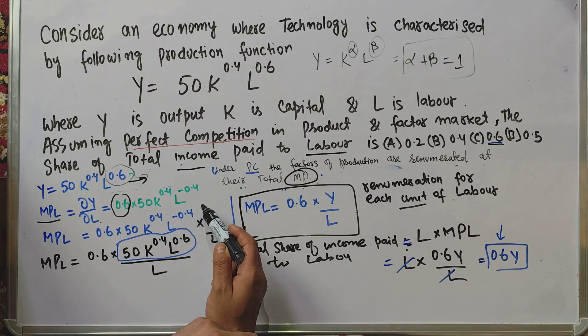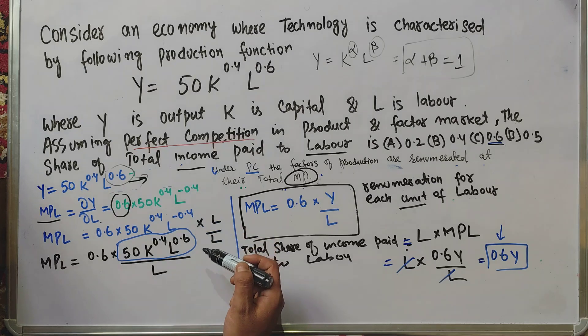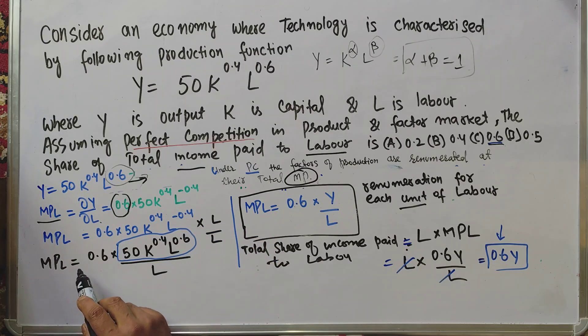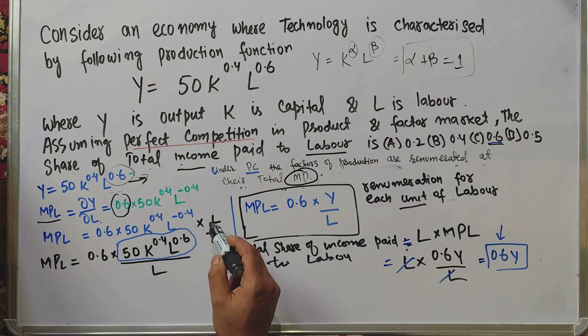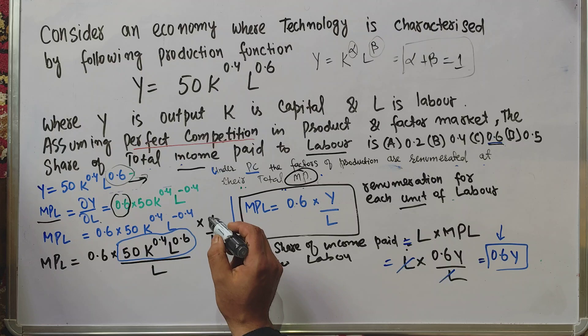Next, we multiply the right-hand side by L/L. We multiply and divide by L to rearrange the expression.